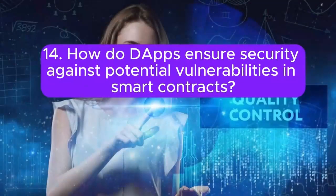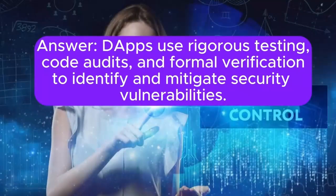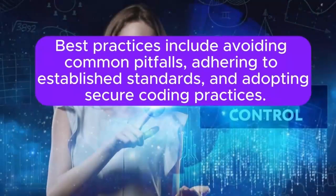14. How do DApps ensure security against potential vulnerabilities in smart contracts? Answer: DApps use rigorous testing, code audits, and formal verification to identify and mitigate security vulnerabilities. Best practices include avoiding common pitfalls, adhering to established standards, and adopting secure coding practices.